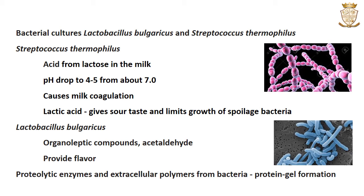The fermentation of lactose also produces the flavor compounds characteristic of yogurt. Streptococcus thermophilus produces mainly acid from lactose, causing the pH to drop to about 4–5 from about 7. This drop in pH causes the milk to coagulate. Lactic acid gives yogurt its soft taste and also limits the growth of spoilage bacteria. Lactobacillus bulgaricus generates more organoleptic compounds, particularly acetaldehyde, providing the particular flavor to the yogurt.